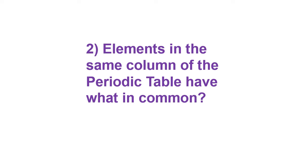Question two: Elements in the same column of the periodic table have what in common? The periodic table is classified column-wise and row-wise. For columns we use the name 'group,' and for rows we use 'period.' Elements in the same group have the same number of electrons in their outermost shell — the same number of valence electrons — and because of this similar valence electron count, they have similar chemical properties.